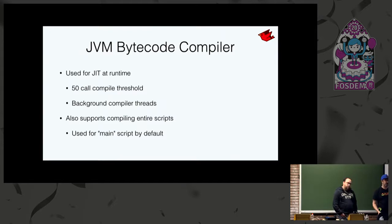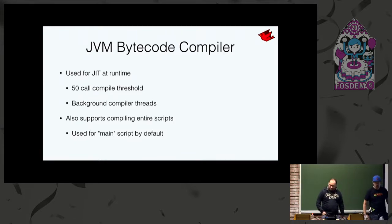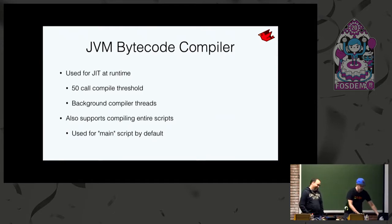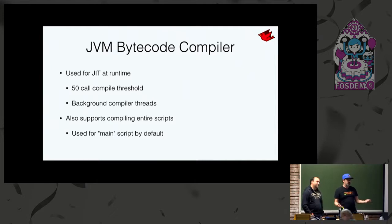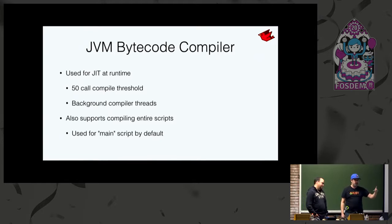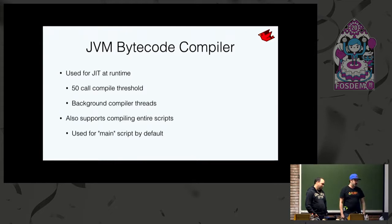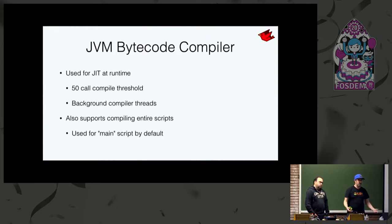Normally the bytecode compiler is used as a JIT: if a method or block gets called 50 times, we turn it into JVM bytecode and the JVM continues to optimize from there. It also supports compiling an entire script. One thing we learned is that people love to benchmark at the root of the main file — if we don't compile the entire file you get a loop that won't optimize because we have no on-stack replacement. So we always compile the target script completely, and expanding that to the rest of the loaded files wasn't a big leap.